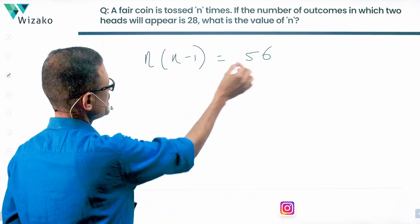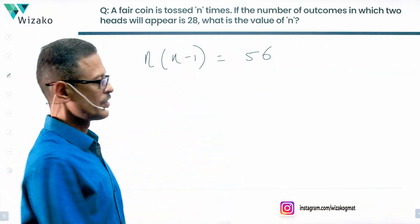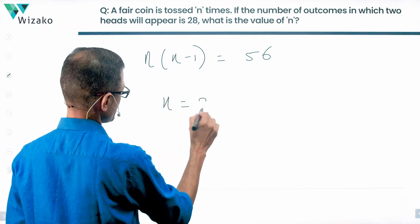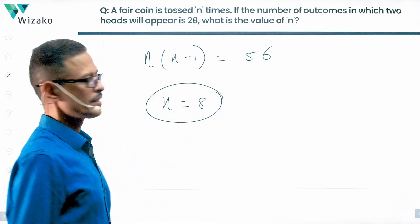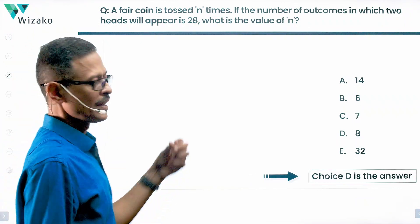Basically, look at it: you have a number, one less than that, the product of these two equals 56. That number is a natural number, a positive integer. 8 times 7 is 56, so n equals 8. How many times did we toss the coin? We tossed the coin 8 times. Choice D is the correct answer.